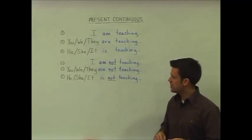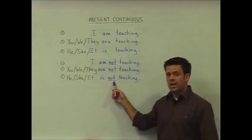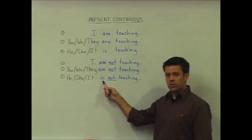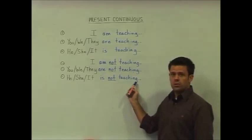In order to form negative sentences, we simply add the word not between our helping verb and our main verb plus ing.